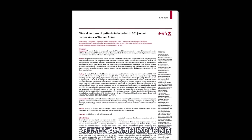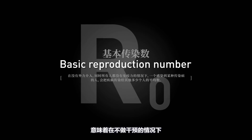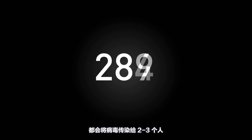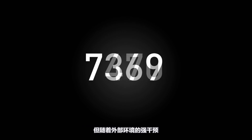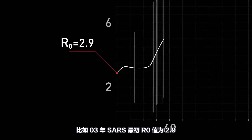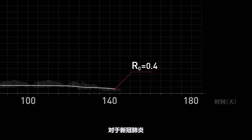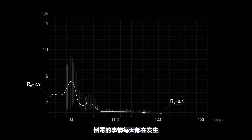After the outbreak, many institutes published estimated R0 values for the novel coronavirus, most of which are between two to three. R0, or basic reproduction number, measures the average number of individuals a single patient infects with no intervention. Each infected individual transmits the virus to two to three other people — that is how the pneumonia broke out in the early stage. With strong external intervention, this average propagation number will start to go down. For example, the 2003 SARS outbreak had an R0 of 2.9 at onset, which then oscillated between 2.0 and 3.5 and finally decreased to 0.4 until it completely disappeared. For the novel coronavirus pneumonia, it will likely be similar.